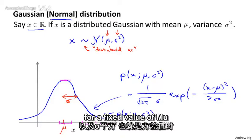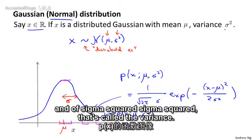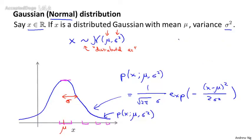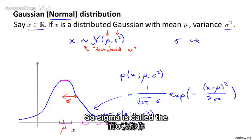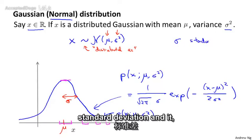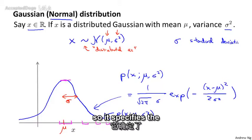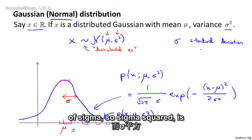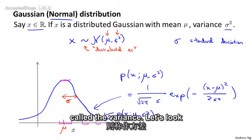Sometimes it's easier to think in terms of sigma squared, which is called the variance. And sometimes it's easier to think in terms of sigma, which is called the standard deviation. Sigma specifies the width of the Gaussian probability density, whereas sigma squared — the square of sigma — is called the variance.